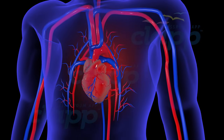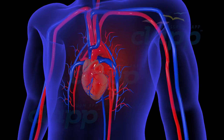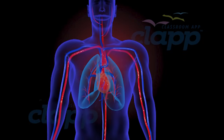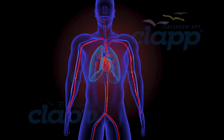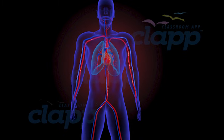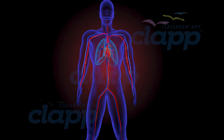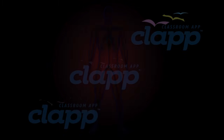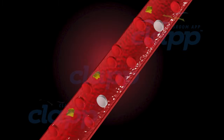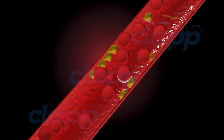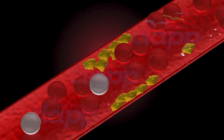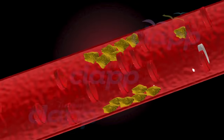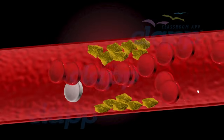Our blood vessels, much like highways in a city, transport blood throughout our bodies, ensuring all our organs receive the oxygen and nutrients they need to function. Sometimes, these blood vessels or arteries can become blocked or narrow due to conditions like heart disease, stroke, or due to the accumulation of plaque.